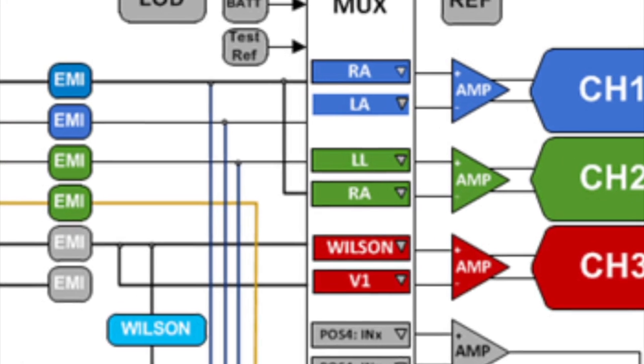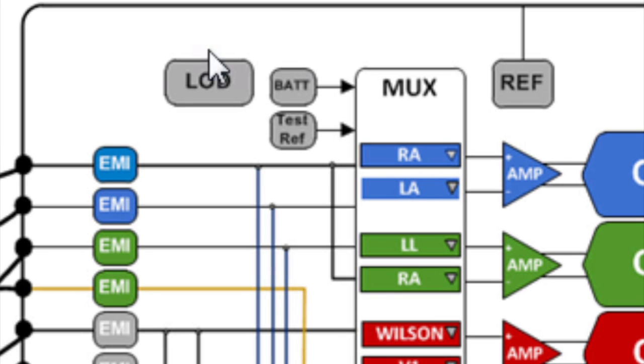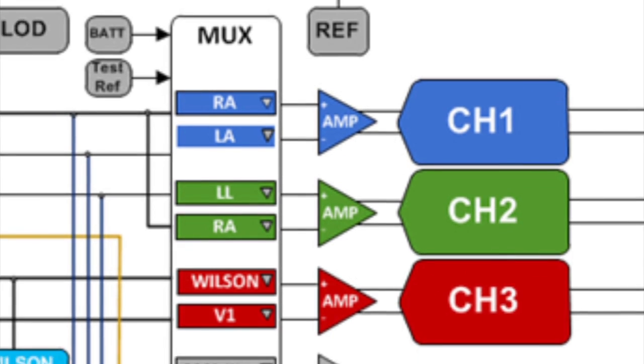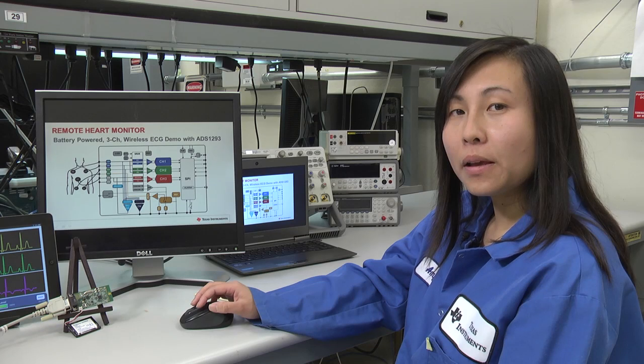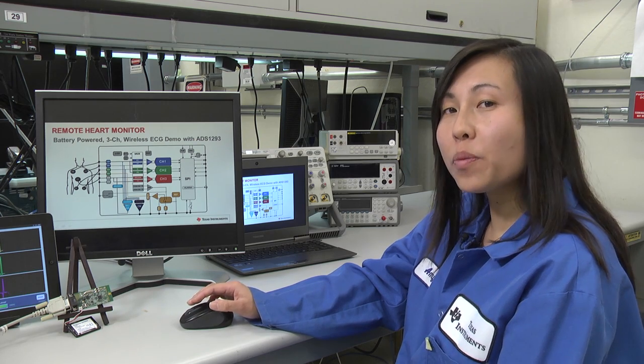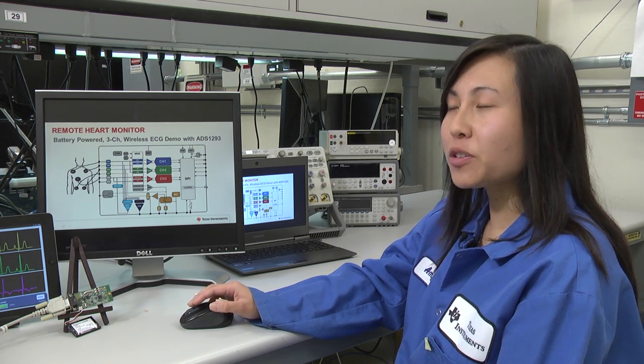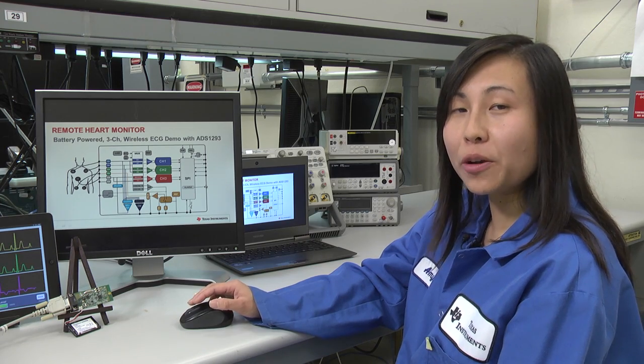There are other features as well. On the very top, we have a lead-off detection which will allow you to detect whenever an electrode has been disconnected. And to the very bottom right, we have an external alarm pin that will allow you to connect to a GPIO to detect whenever an electrode has been disconnected. This device is perfect for portable ECG applications because of its low power, 0.3 milliwatts per channel.